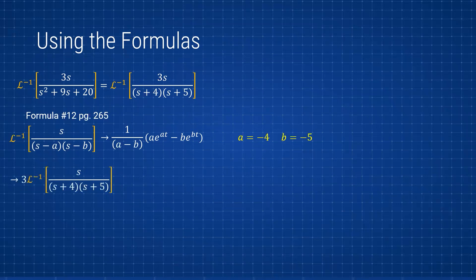We can factor out the 3, take the Laplace of that, and we're going to end up with 3 over 1 times (-4e^(-4t) + 5e^(-5t)), and it simplifies to -12e^(-4t) + 15e^(-5t), which is exactly what we found using partial fraction decomposition.